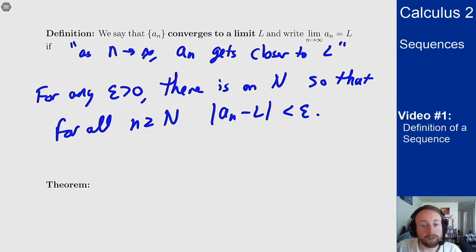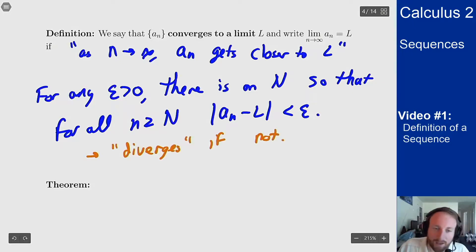We also have the negated version of this, where if this doesn't happen, we see the sequence an diverges. You'll also use here the term diverges to infinity to tell you what's happening as well.